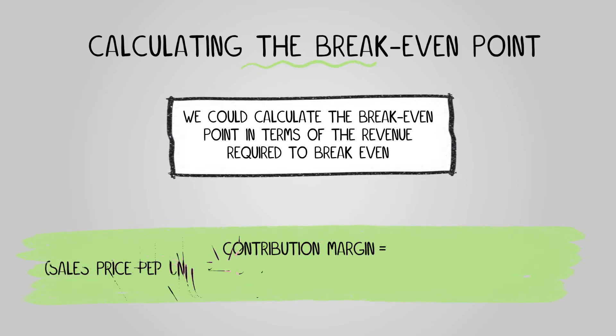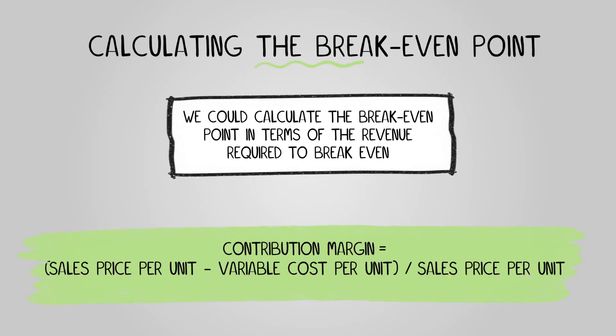This is calculated as: contribution margin equals sales price per unit minus variable cost per unit, divided by sales price per unit.